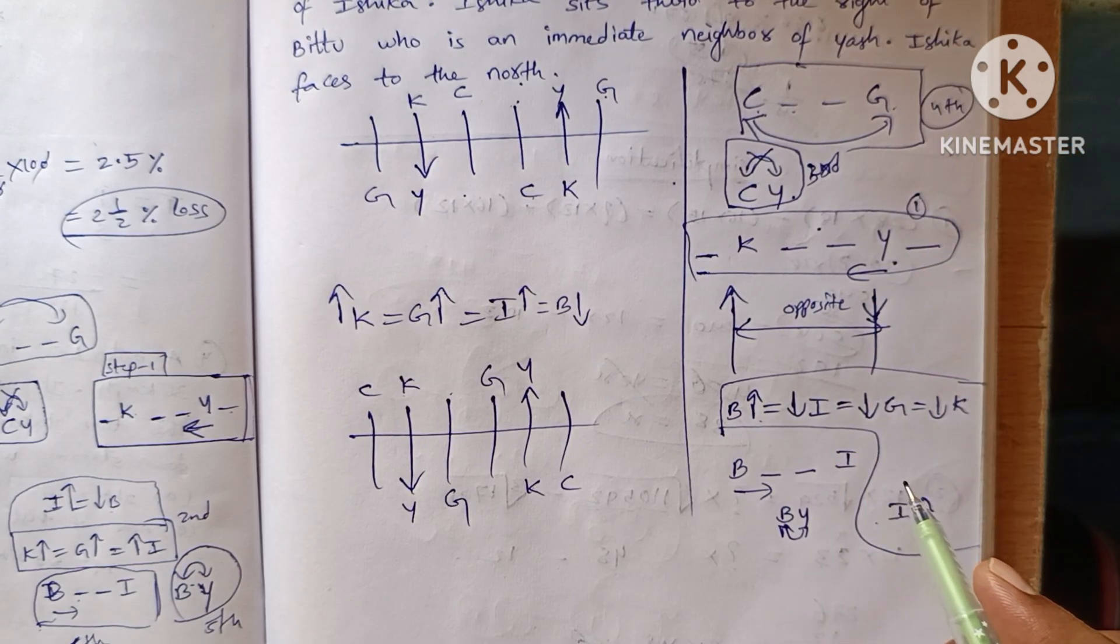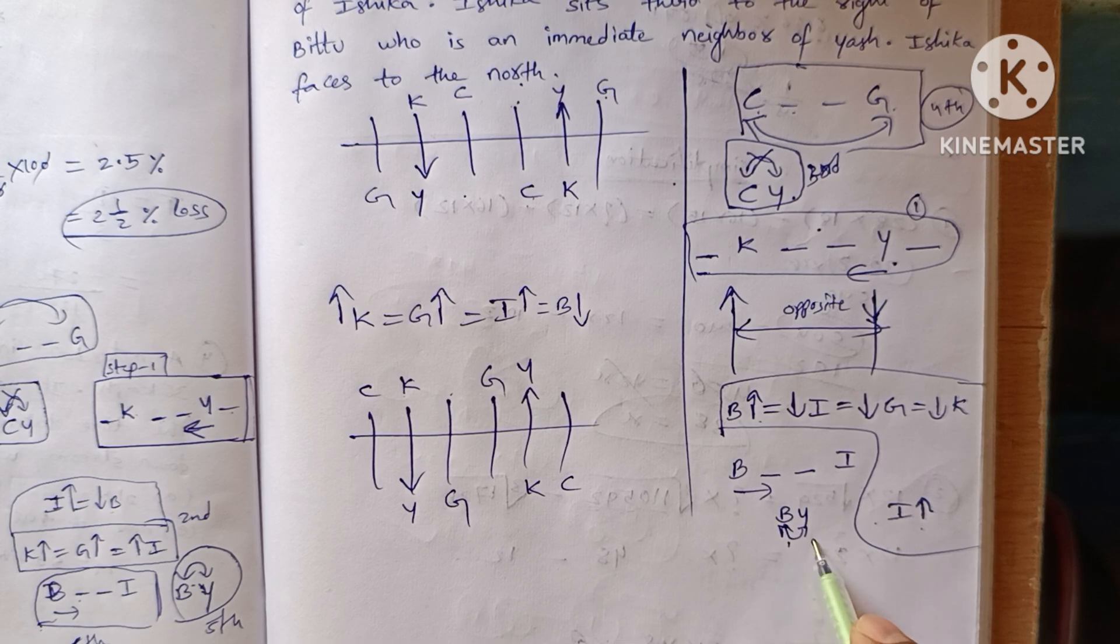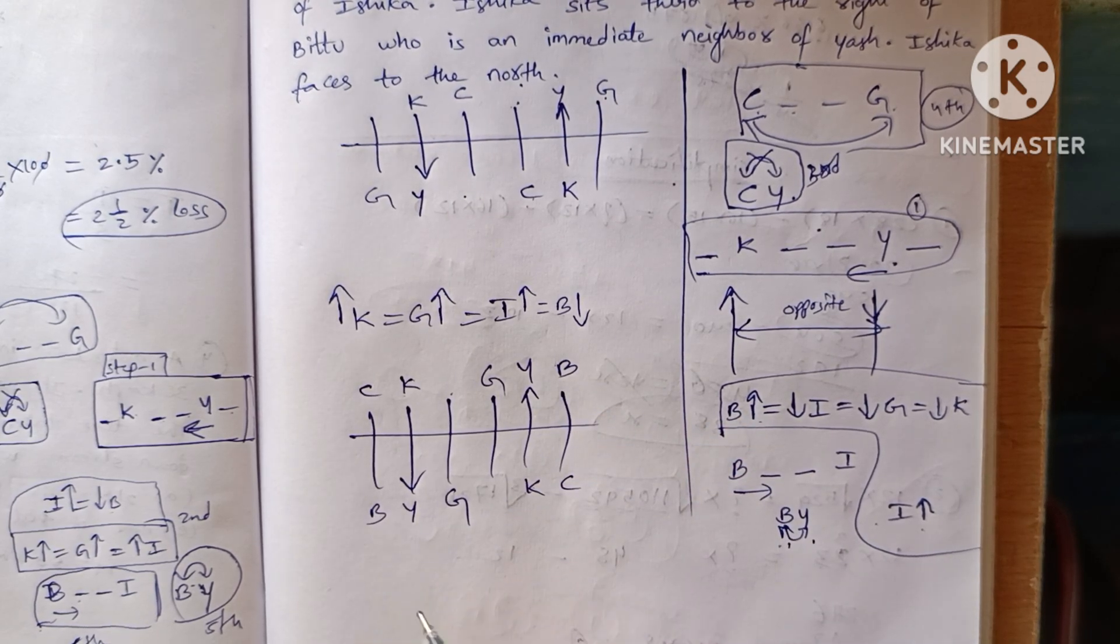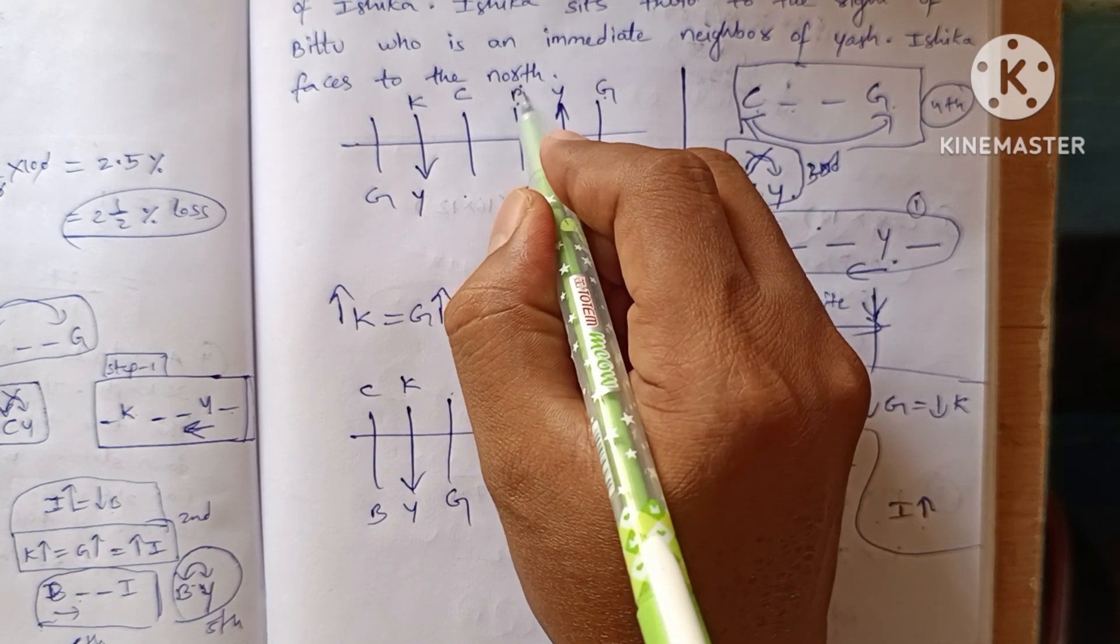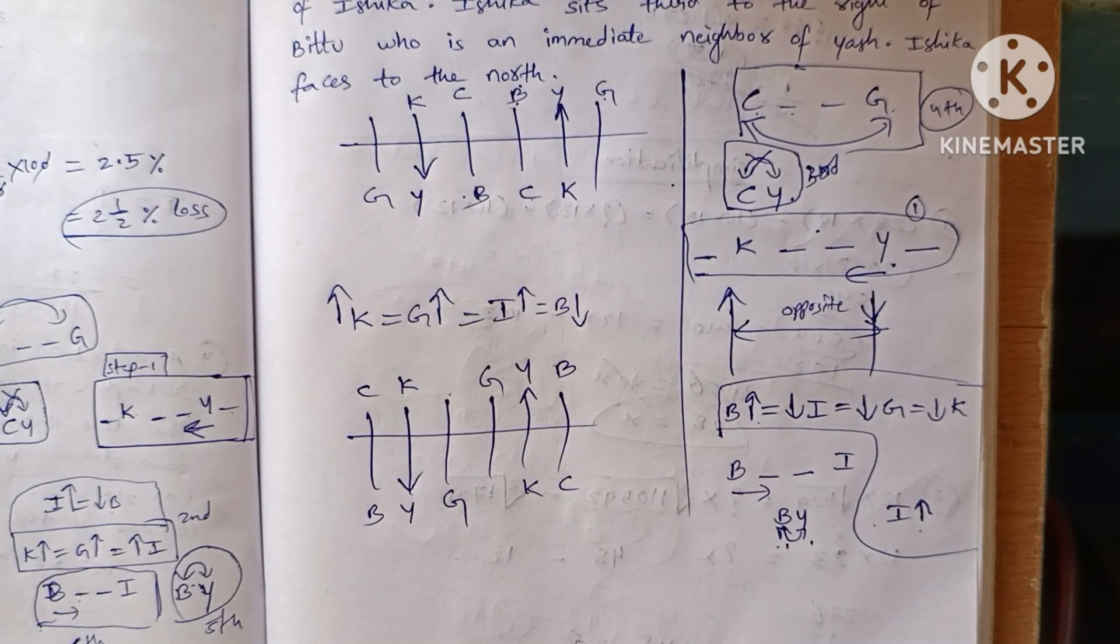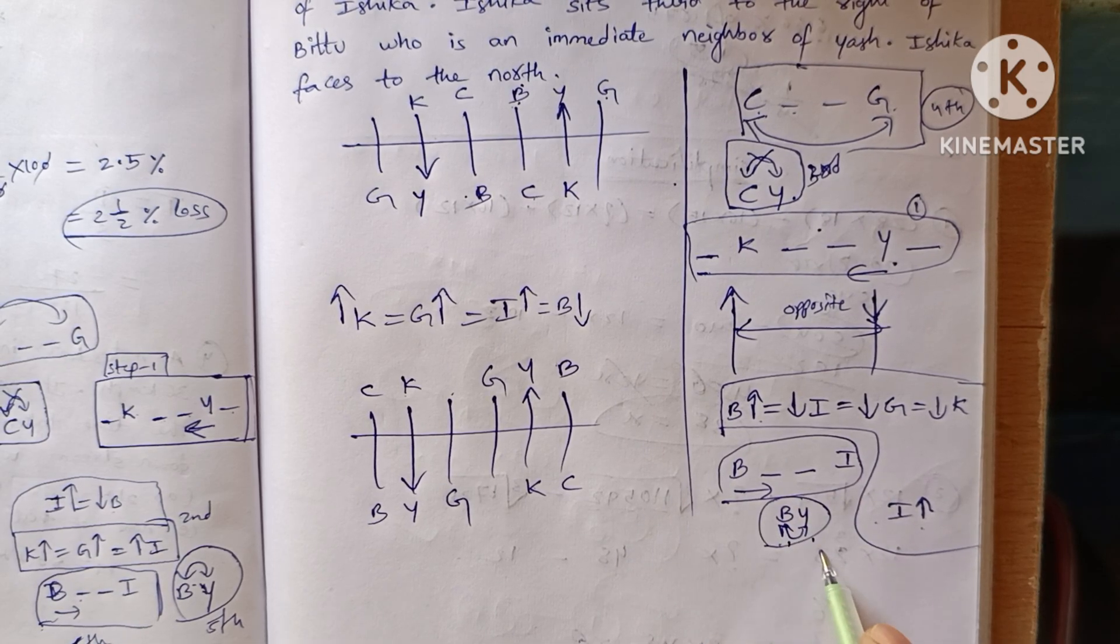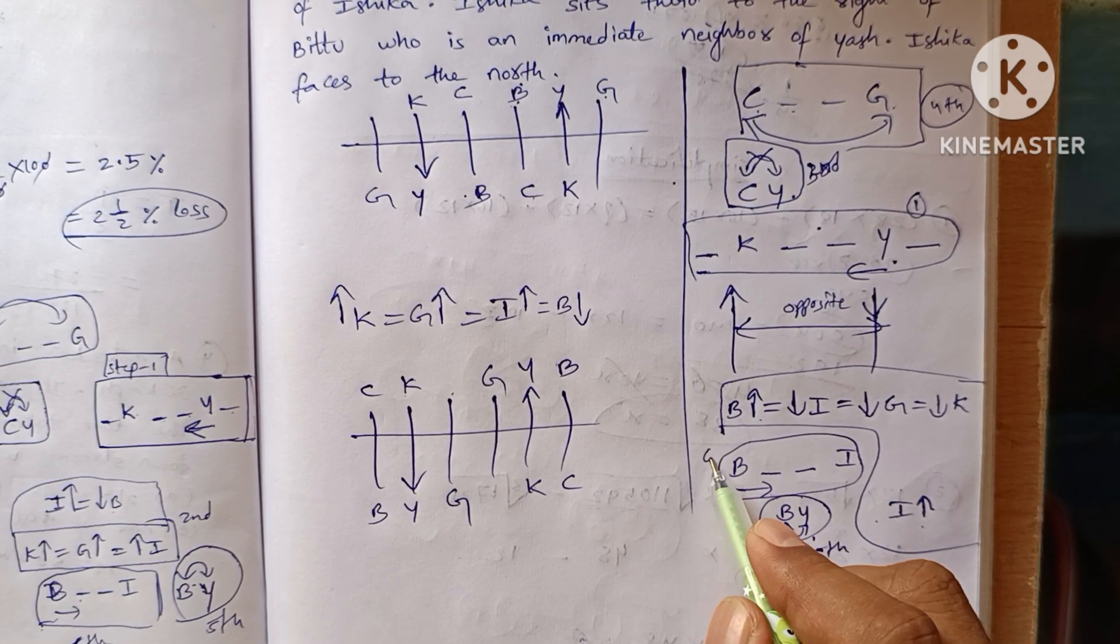Next one. What will be the fifth step? B and Y are adjacent to each other, so B place is here, B place is here, here, here. Now let's see the last one, sixth one. This is fifth, this will be the sixth.